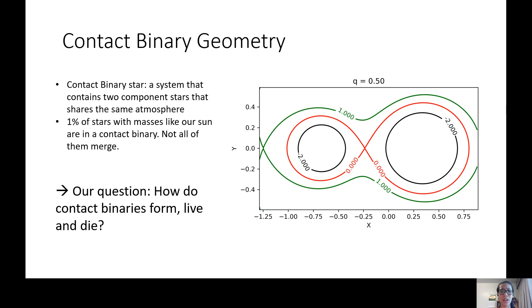About 1% of stars with masses like our sun are in a contact binary, simply because they are common and have a longer lifespan. However, when stars form, they are enormous in size. Over time they shrink and hence are unable to form as contacts.